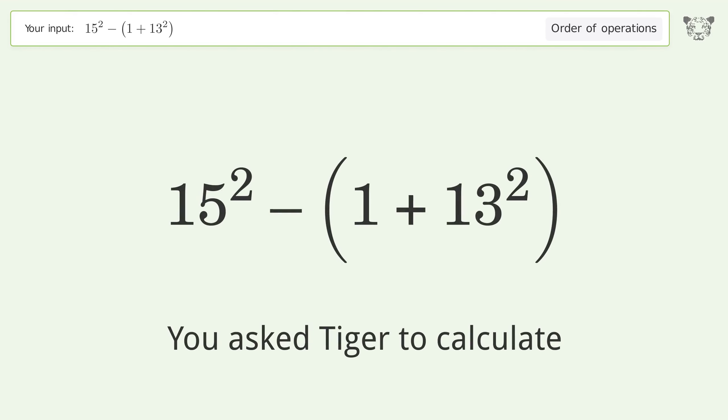You asked Tiger to calculate. This deals with the order of operations. The final result is 55. Let's solve it step by step. We begin